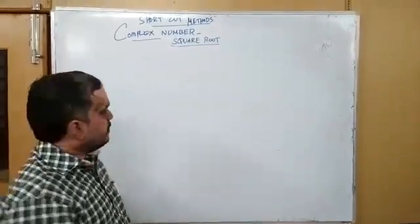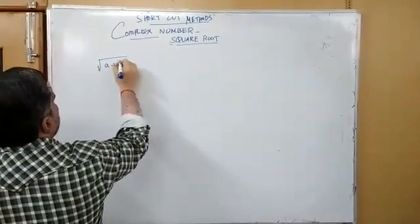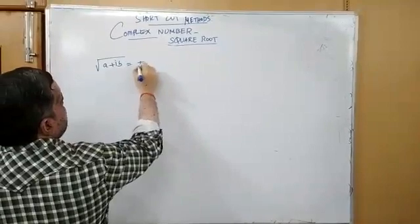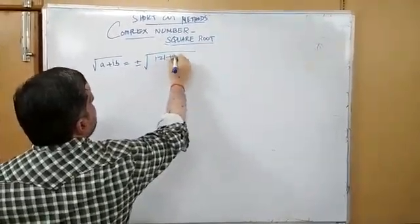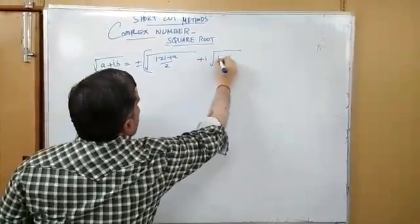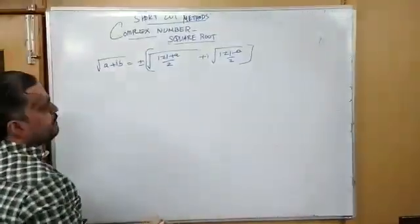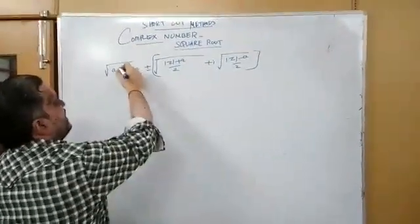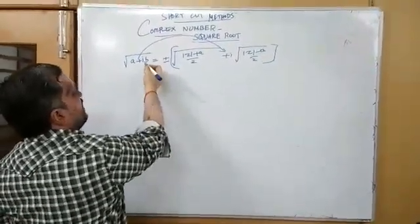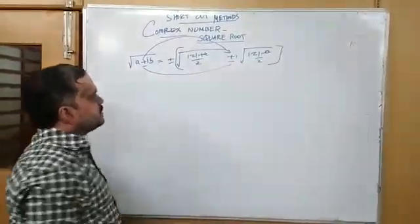First, I am giving the formula for square root. The square root of a plus ib is equal to plus or minus: square root of (|z| plus a) by 2, plus or minus i times square root of (|z| minus a) by 2. If one gives plus in the imaginary part, you take it plus here. Suppose one gives the imaginary part as negative, you take it minus. So, depending upon the question, you take plus or minus for this imaginary part.